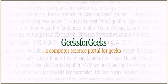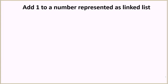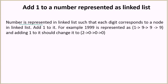Hello everyone and welcome to GeeksforGeeks. Today the problem we're going to see is to add 1 to a number represented as a linked list. In this problem, a number is represented in a linked list such that each digit corresponds to a node, and we have to add 1 to it. For example, the number 1999 will be presented as 1→9→9→9 inside the linked list.